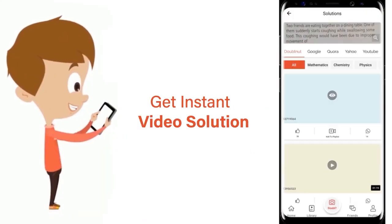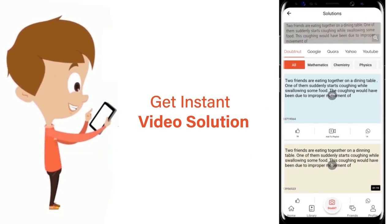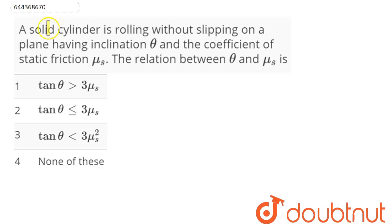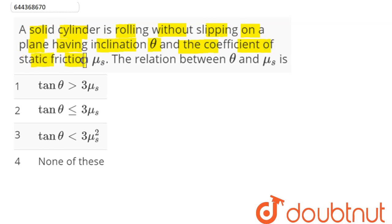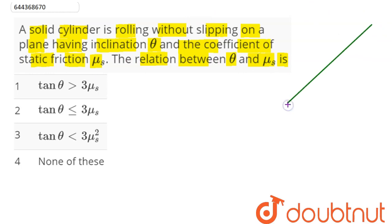The question is: a solid cylinder is rolling without slipping on a plane having inclination theta and coefficient of static friction mu s. Find the relation between theta and mu s. Suppose this is our inclined plane with angle of inclination theta.